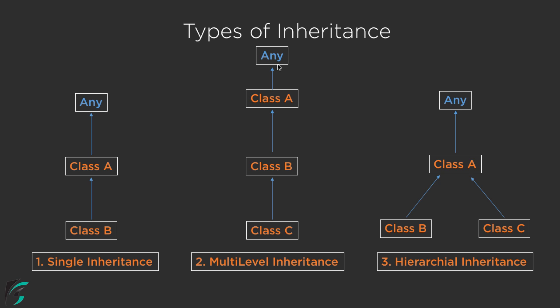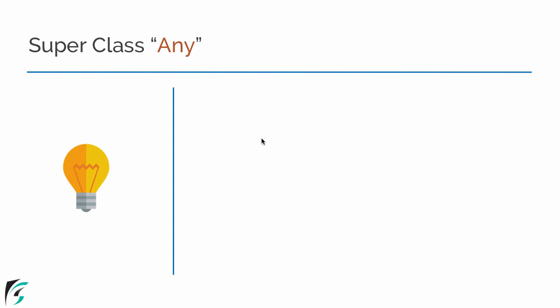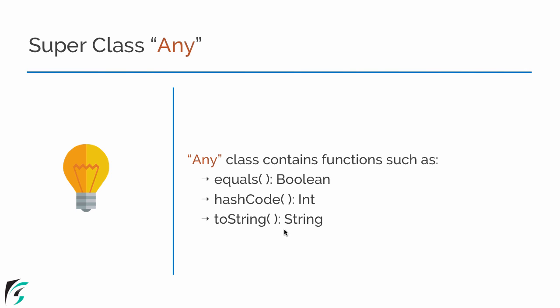Now what does class Any stand for? Class Any simply contains some default functions such as the equals method, the hashCode method, and the toString method. These methods simply return some value which is boolean, integer, and string respectively. What the usage of these methods are, we will talk about shortly in our demo video.